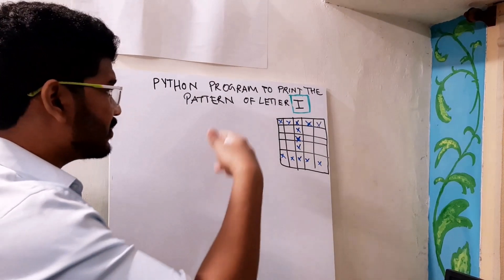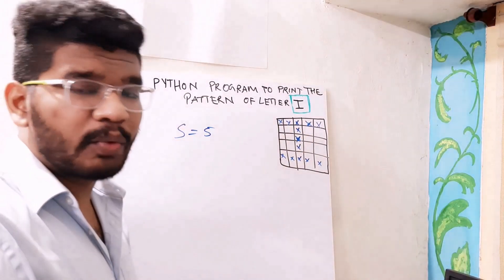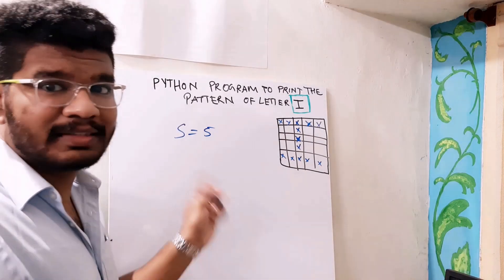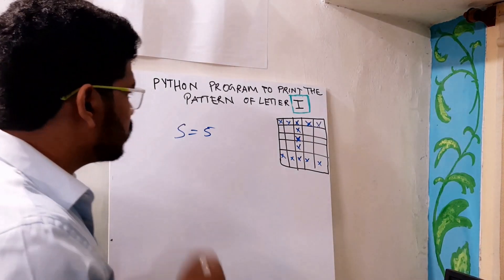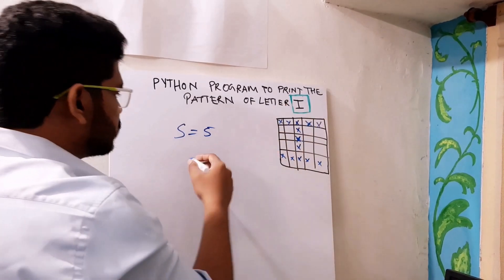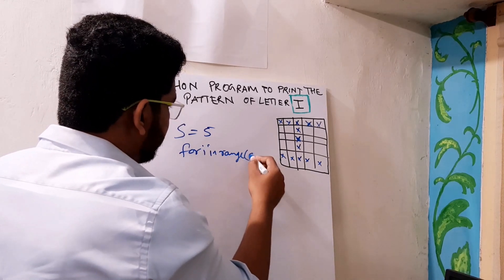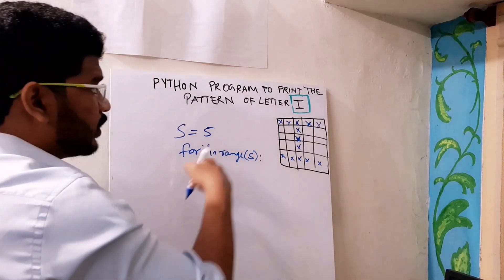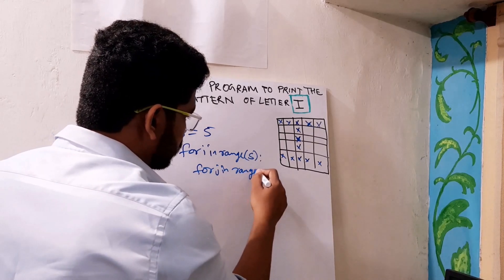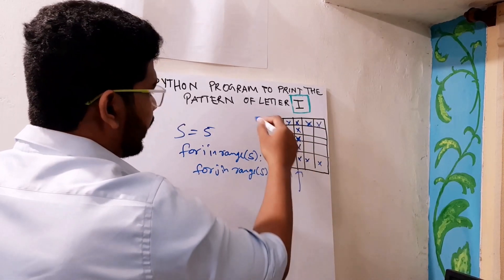Let's assume the size is 5, as this is a 5 by 5 square. In the Python program where I am going to code in my IDE, I will take the size from the user. For explanation purposes, the static size here is 5. So size is 5. I need to write a for loop — one loop for rows and one loop for columns. For i in range S — i is for rows. For j in range S — j is for columns.